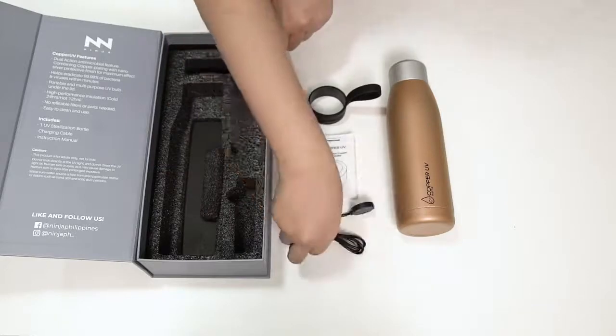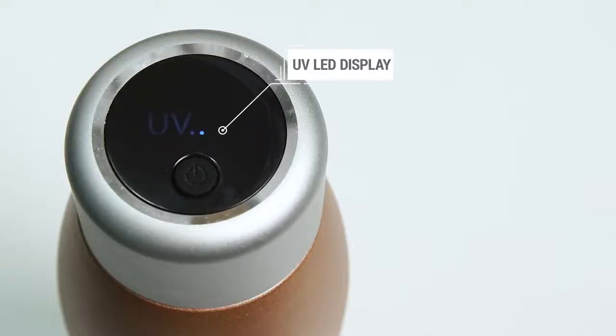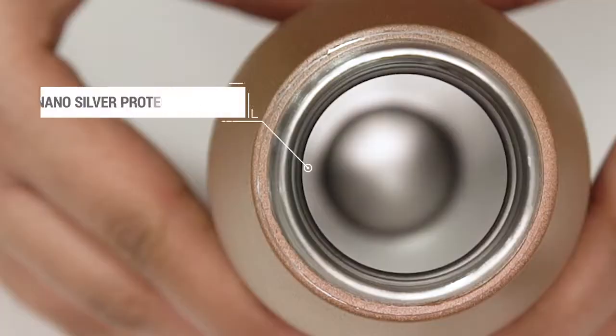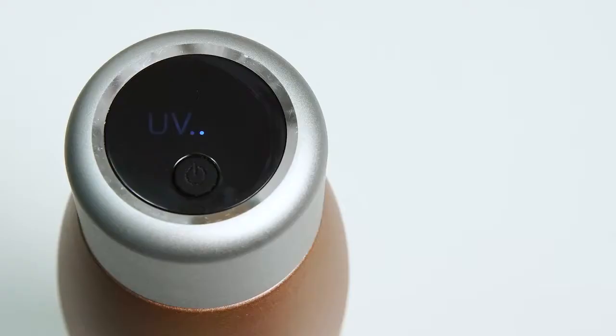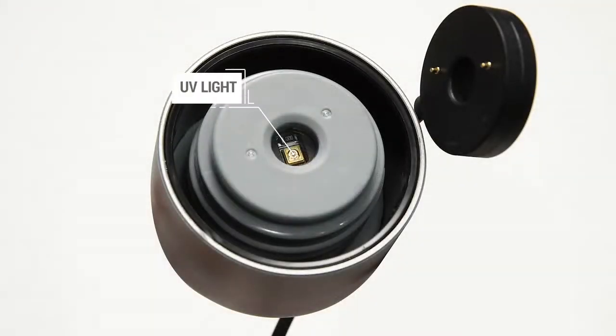Now let us explore the parts of the UV sterilization bottle. This part is the UV LED display, while this one is the nano silver protective finish. Next is the UV sterilizing power button. This part is the silicone cover. The next one is the UV light and lastly the charging contractors.